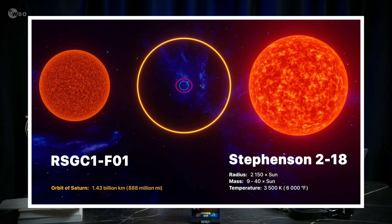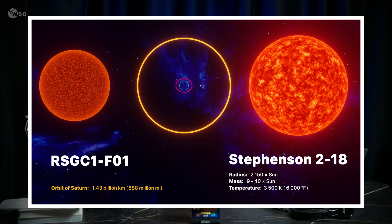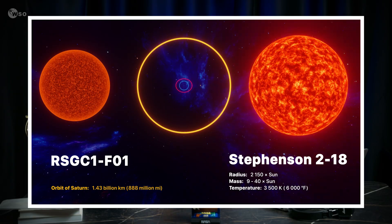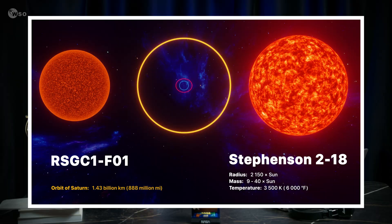And unlike Stephenson 2-18, with its radius of 2,150 times the sun's, it obeys the laws of physics. So for now, it is the largest well-supported red supergiant star that we know of.